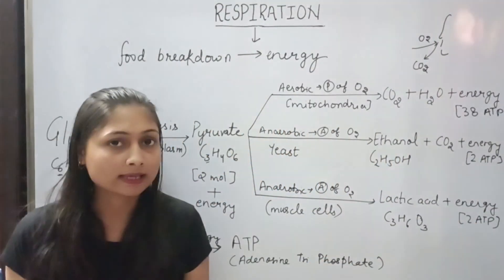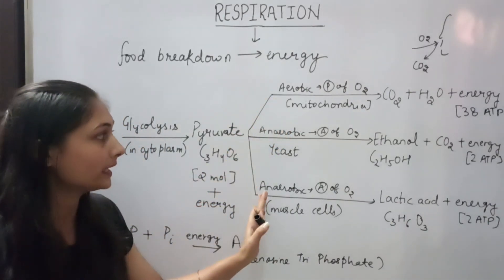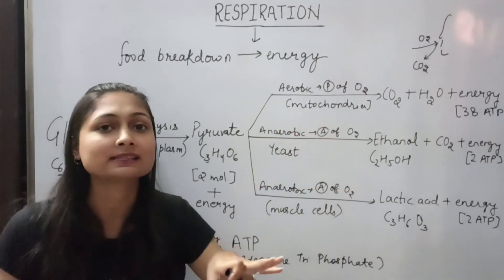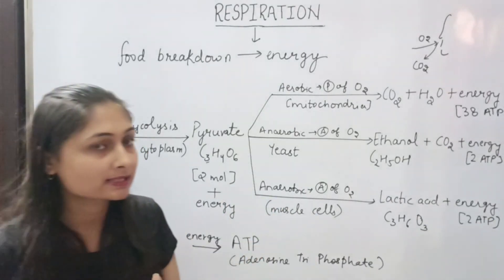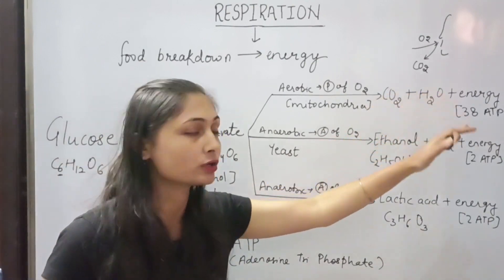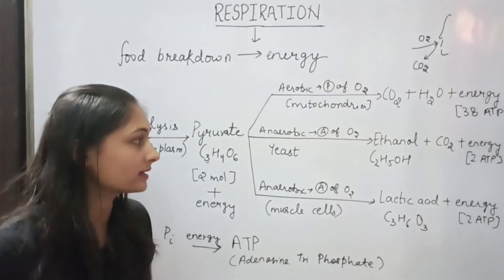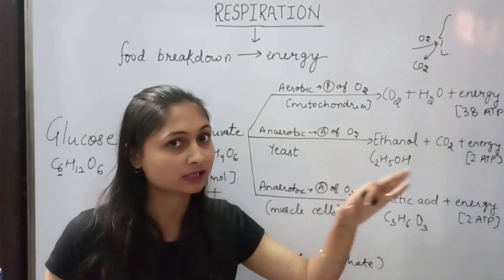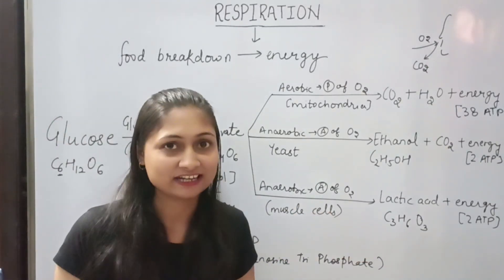Now let's see the clear-cut differences between aerobic and anaerobic respiration. The first difference: aerobic respiration takes place in the presence of oxygen, and anaerobic respiration takes place in the absence of oxygen. The second difference is end products: in aerobic respiration, the end products are carbon dioxide plus water, plus energy. In anaerobic respiration, if we talk about yeast cells, the products are ethanol plus carbon dioxide plus energy; and in muscle cells, it will be lactic acid plus energy.